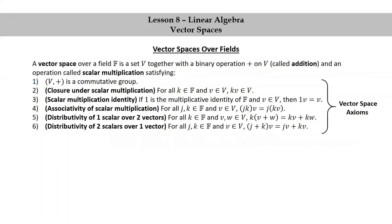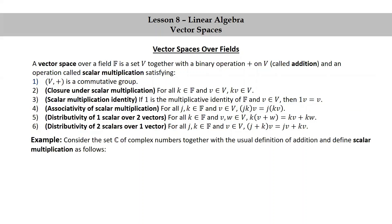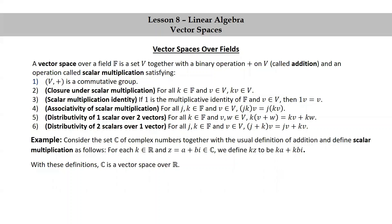These six properties together are known as the vector space axioms. Let's look at an example. Consider the set C of complex numbers together with the usual definition of addition, and define scalar multiplication as follows: for each scalar k in R and z equals a plus bi in C, we define kz to be ka plus kbi. This is a very natural definition for scalar multiplication. With these definitions, C is a vector space over R. Let's verify two of the properties — properties one and four — and of course you should verify the rest on your own.